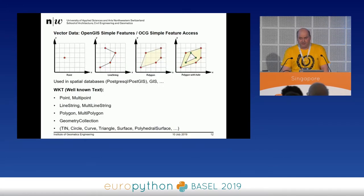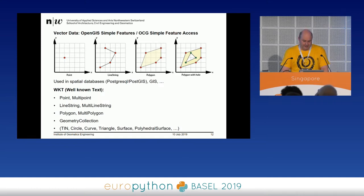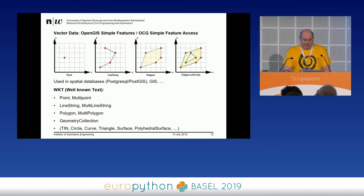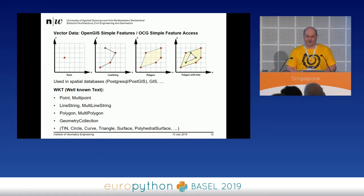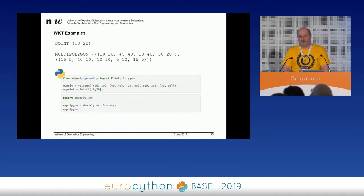If you look at vector data, there are specifications like the OGC Simple Feature Access specifications, where vector data is defined. This is used in many databases like PostGIS, PostgreSQL, and so on. One representation is just using text — Well-Known Text (WKT). I use text to specify a point or a polygon. The reason is you can print it, and in 100 years you can still read it — which is a very important topic in the archival world. There's also WKB, a binary format, but I won't cover that now.